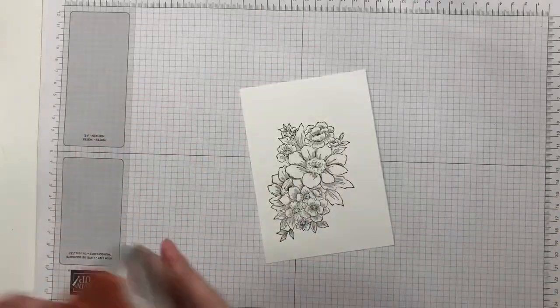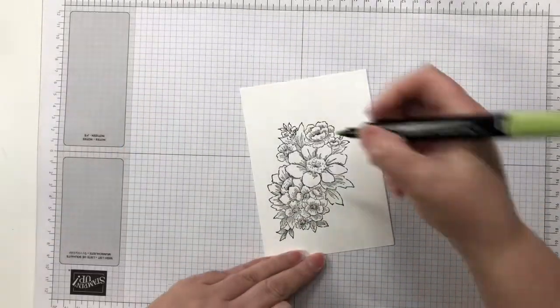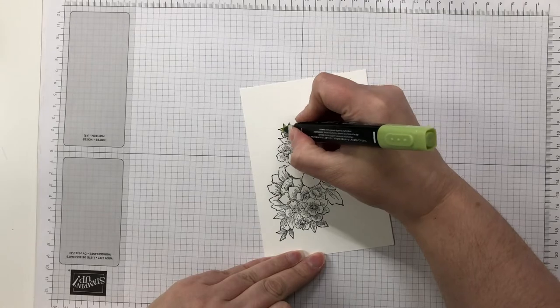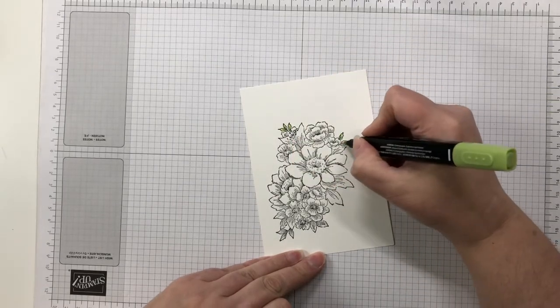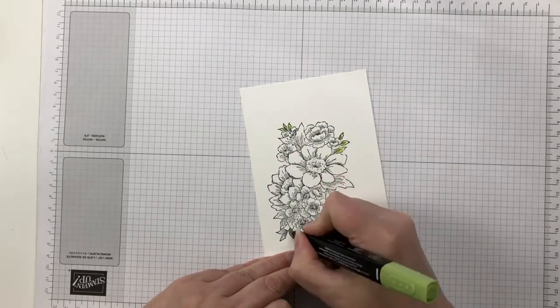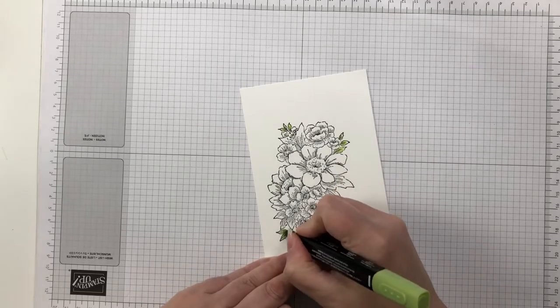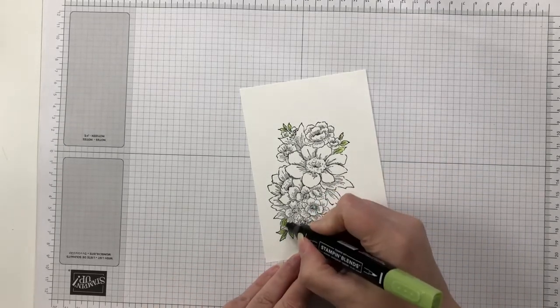I start by stamping out the main floral image from the Blessings of Home stamp set. That stamp set has turned out to be one of my favorites. Do you guys like it? I just think it's so pretty. Of course I like coloring and it's got a lot that you can color.